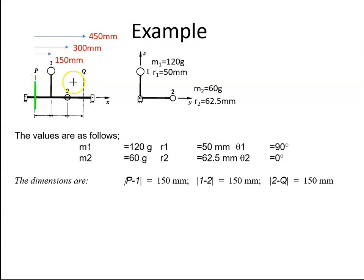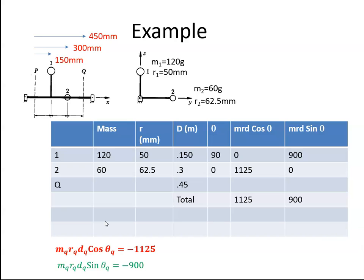I'm going to take the moments about P. We could easily have taken them about Q also, we should get the same answer, but let's just take it about P for the time being. We need to get the sum of M1 R1 D1 cosine theta 1 plus M2 R2 D2 cosine theta 2 and we need to add those up.